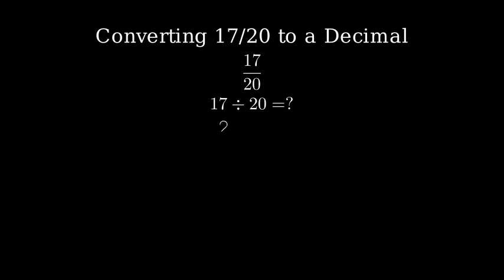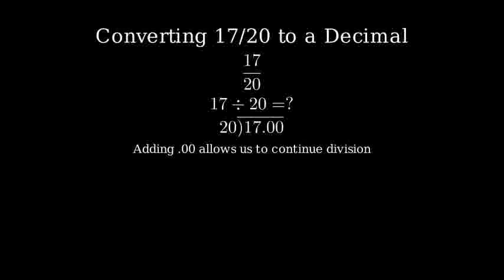Let's solve this using long division. First, we set up our long division problem with 20 on the outside and 17 on the inside. Since 17 is less than 20, we need to add a decimal point and zeros after the 17 to continue our division. I've added two zeros after the decimal point, which will help us get our answer to two decimal places.